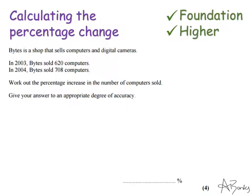Give your answer to an appropriate degree of accuracy. This is a Foundation question and it's quite a simple process. There's just a formula you need to remember that you can use every time. The first thing I need to find is the actual amount of change. So I'm going to do 708 take away 620, and that's 88. So from 2003 to 2004, they sold 88 more computers.